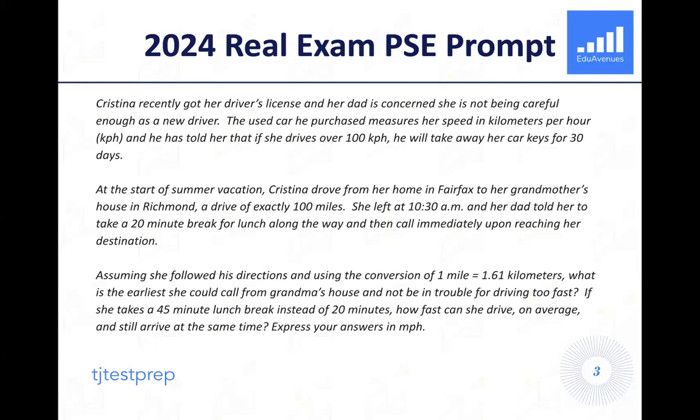At the start of summer vacation, Christina drove from her home in Fairfax to her grandmother's house in Richmond, a drive of exactly 100 miles. She left at 10:30 a.m., and her dad told her to take a 20-minute break for lunch along the way and then call immediately upon reaching her destination. Assuming she followed his directions and using the conversion of one mile equals 1.61 kilometers, what is the earliest she could call from grandma's house and not be in trouble for driving too fast? If she takes a 45-minute lunch break instead of 20 minutes, how fast can she drive on average and still arrive at the same time? Express your answers in miles per hour.